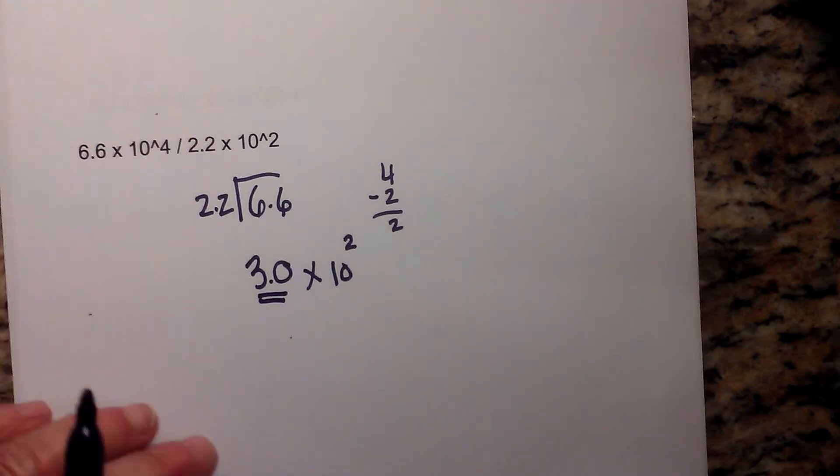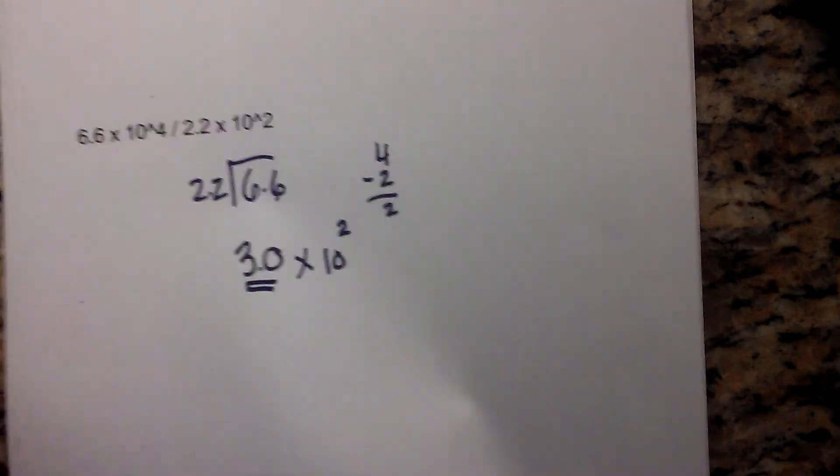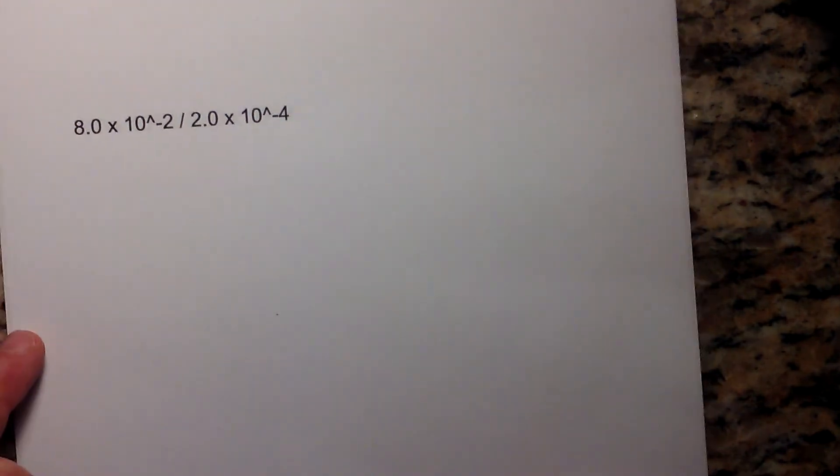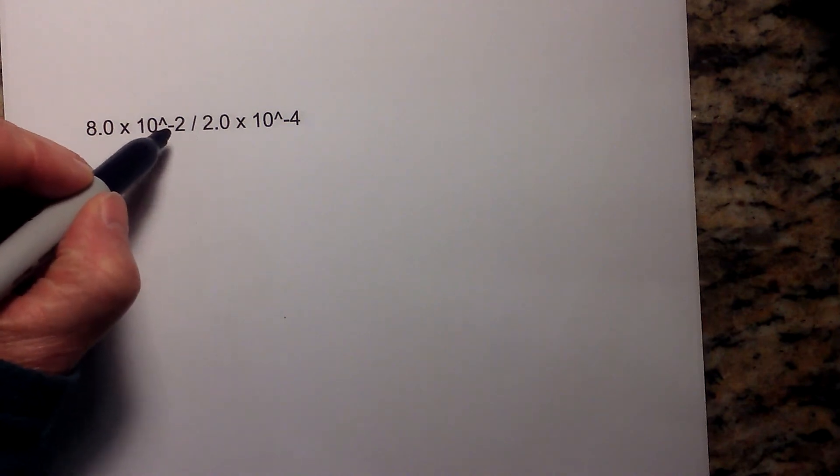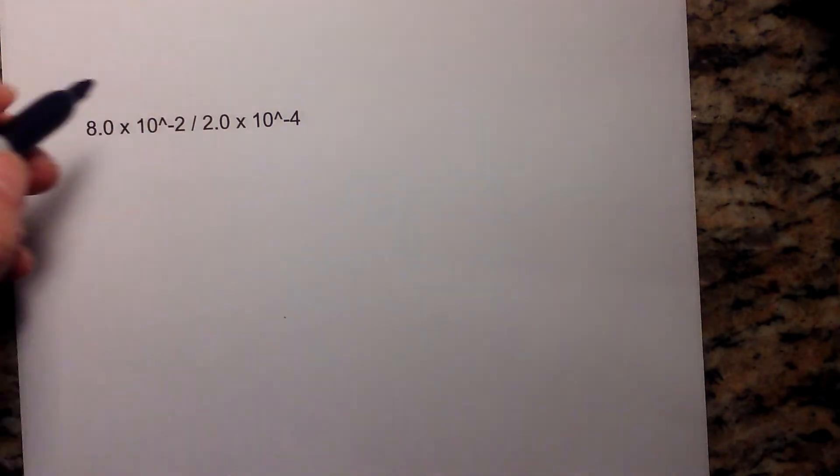This next one will seem a little tricky at first but it's actually not. You need to be careful of the signs. You have 8.0 times 10 to the negative second divided by 2.0 times 10 to the negative 4.